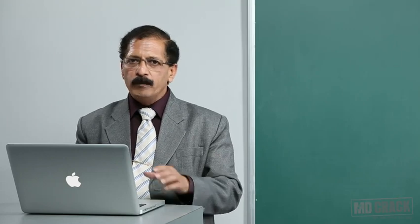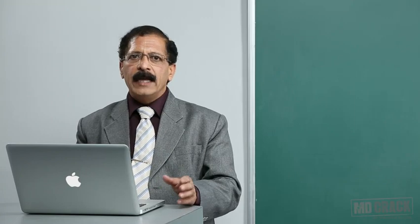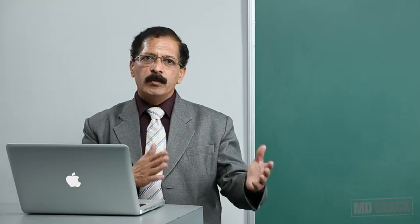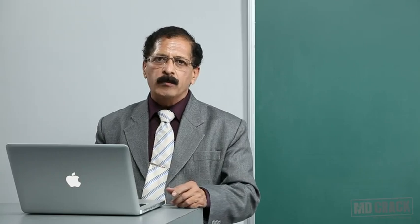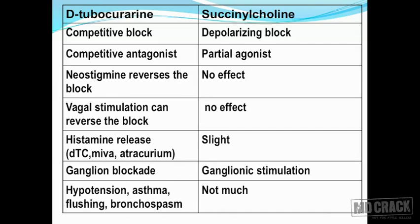Now let's compare between D-tubocurarine, the traditional prototype neuromuscular blocker, and the depolarizing agent succinylcholine. D-tubocurarine is a competitive blocker and succinylcholine is a depolarizing blocking agent. D-tubocurarine is a competitive antagonist, whereas succinylcholine is a partial agonist. Neostigmine can reverse the block produced by D-tubocurarine - this is called post-operative decurarization. As for succinylcholine, neostigmine does not produce a significant reversal effect.